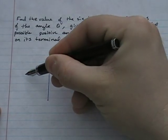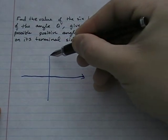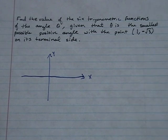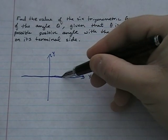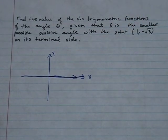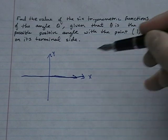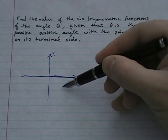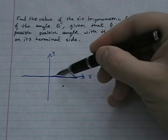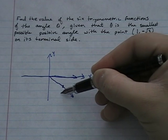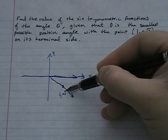Most of the time they'll tell you the angle is in standard position. If they don't, we assume it's in standard position. We've got an xy coordinate axis; the initial side is always on the x-axis and the terminal side goes off into a quadrant. The point (1, -√3) is 1 unit to the right and √3 units down, so I'll mark that point right here.